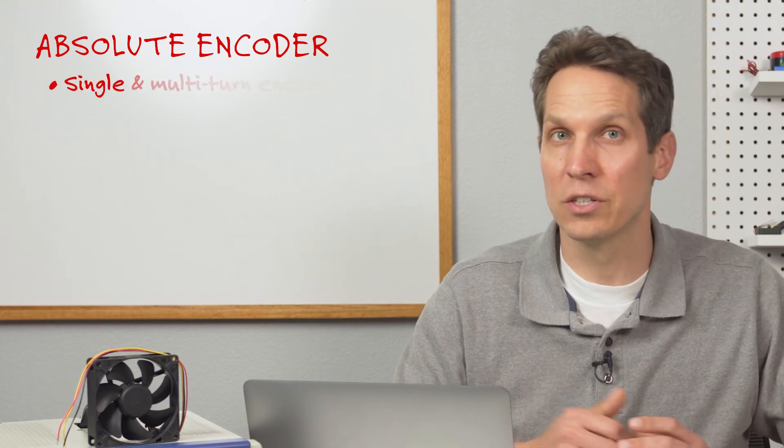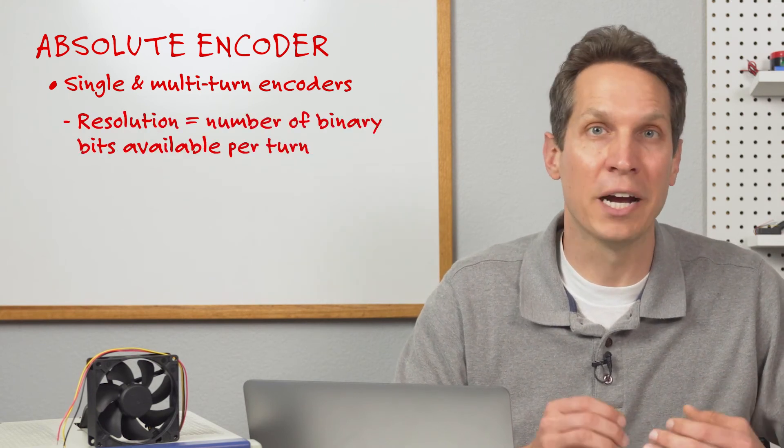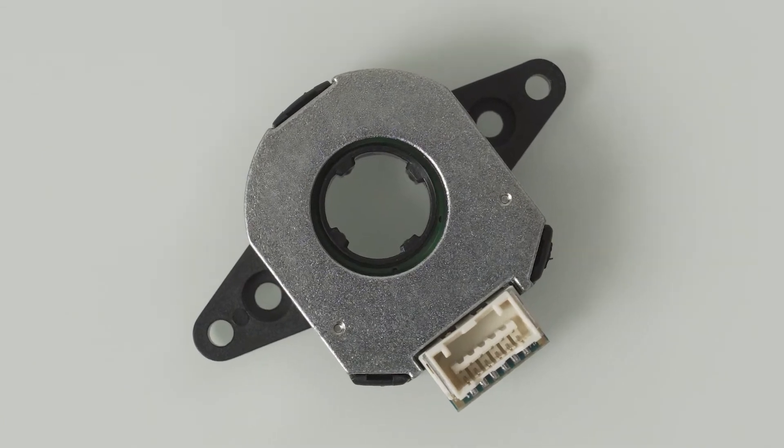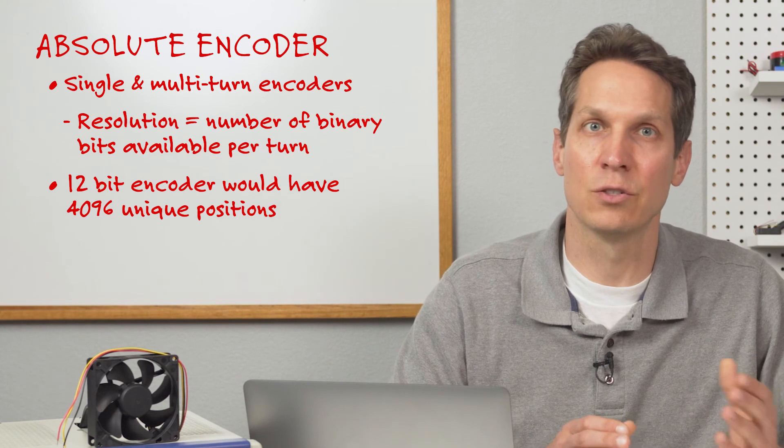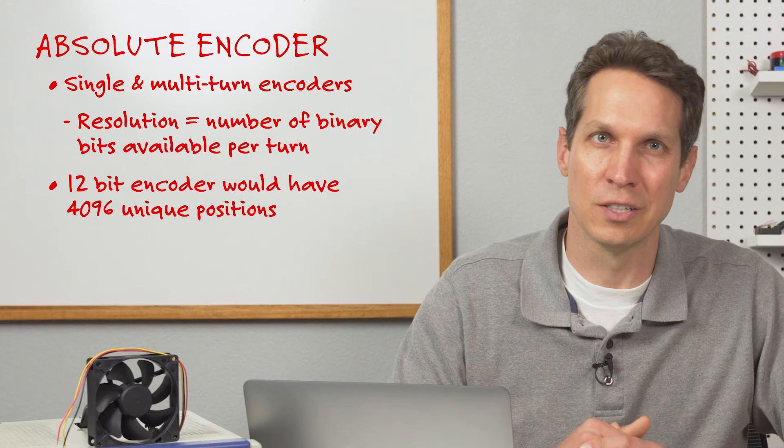For both single and multi-turn encoders, the resolution of these sensors is usually specified as the number of binary bits available per turn. For instance, a 12-bit encoder would have 4096 unique positions similar to the number of states in the 1024 PPR, or 4096 CPR, incremental encoder described earlier.